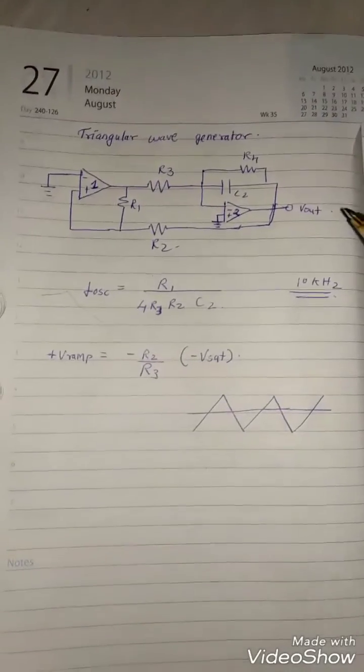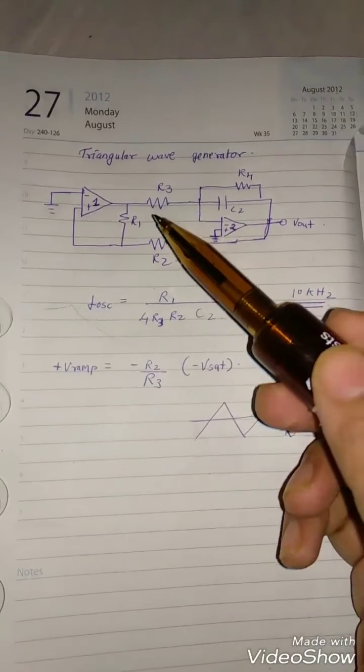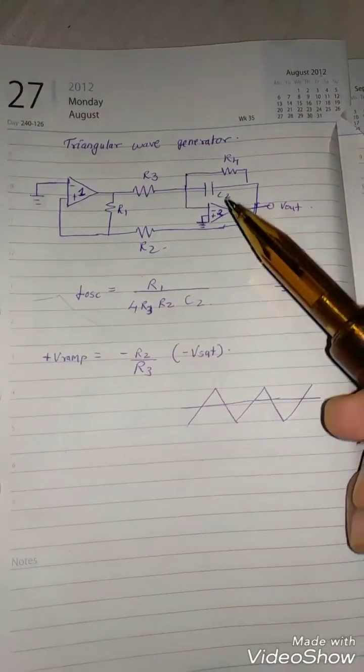Okay, so this is the circuit for triangular waveform generator. Here we have unknowns as R1, R2, R3, R4, and C2.